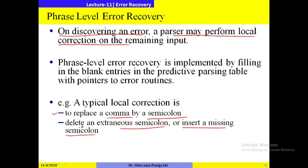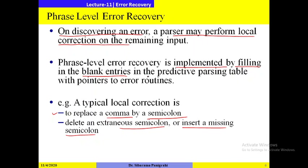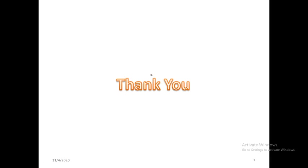Phrase-level error recovery is implemented by filling blank entries in the predictive parsing table with pointers to error routines. When a blank entry is encountered, it should generate an informative error message so the programmer can rectify the error. These are the two error recovery techniques used in syntax analysis. We will cover all these in more detail when we go through error recovery techniques.